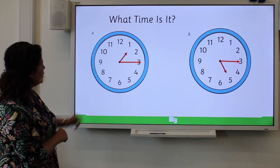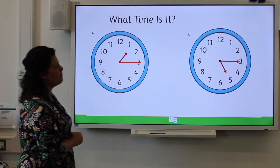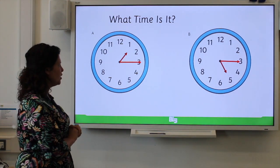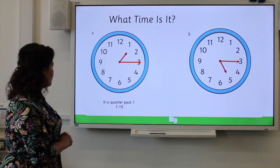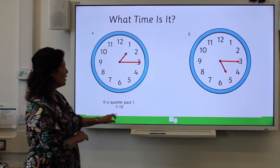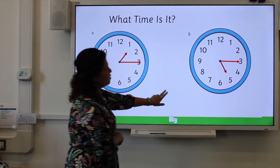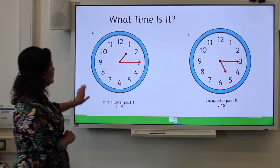You know it. Pen and paper, have a go. What time is it? So have a go at A and B. Pause the video if you need to. And you should have written, it is quarter past one, or one fifteen. And over on clock B, it is quarter past five, five fifteen.